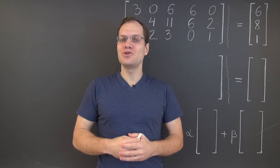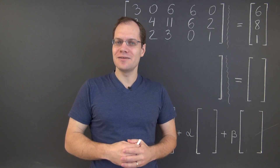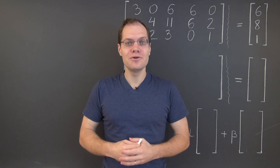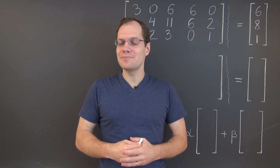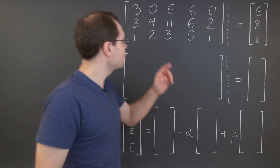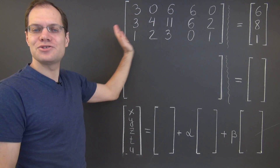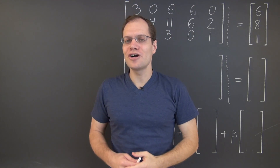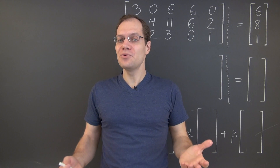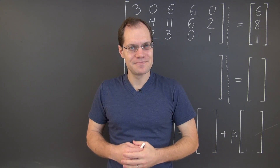The purpose of this video is twofold. One is to go over another Gaussian elimination example, and the other is to show you that you can be pragmatic when it comes to Gaussian elimination, meaning that you don't always have to start at the top left and move down and to the right. You can start wherever you want, as long as you don't undo what you achieved in the previous step.